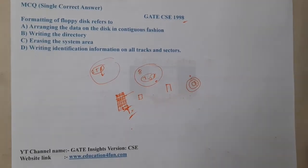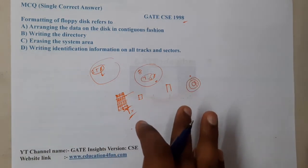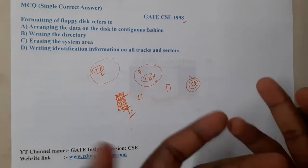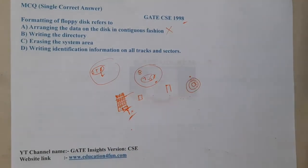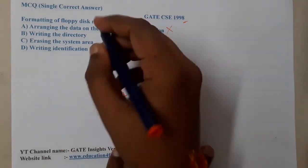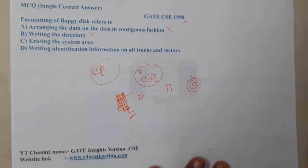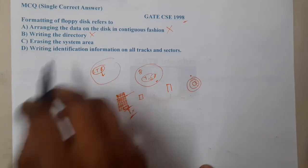Now let us check the options. Option A says 'arranging the data on the disk in contiguous fashion.' Since formatting deletes everything, there is no data left to arrange in contiguous fashion — that is absolutely wrong. Option B says 'writing the directory,' which is also wrong because we are not writing or copying anything into the disk during formatting.